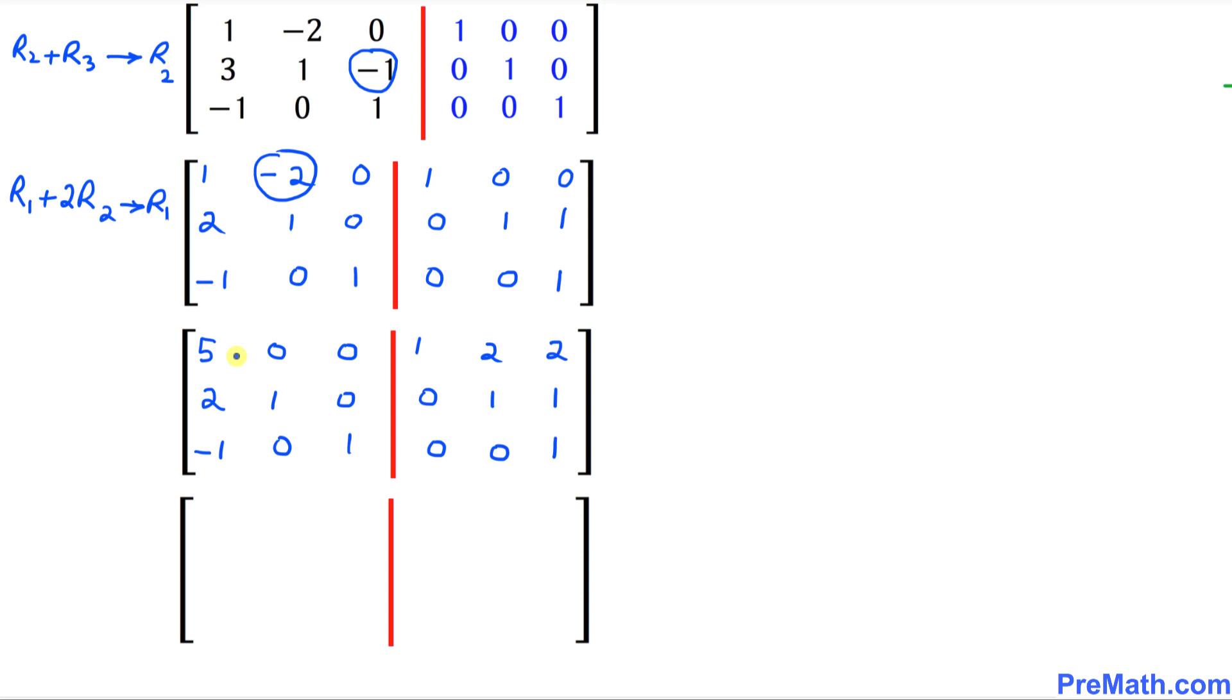as you can see, in the very first row, we can make this 5 over here. I want to make it 1, so the only way I can make it 1 is by just multiplying by 1/5. So I'm going to write down 1/5 of this row R1. So that is going to become 1, 0, 0. I'm just dividing this row 1 by 5. So this is going to become 1/5, 2/5, and 2/5 as well.